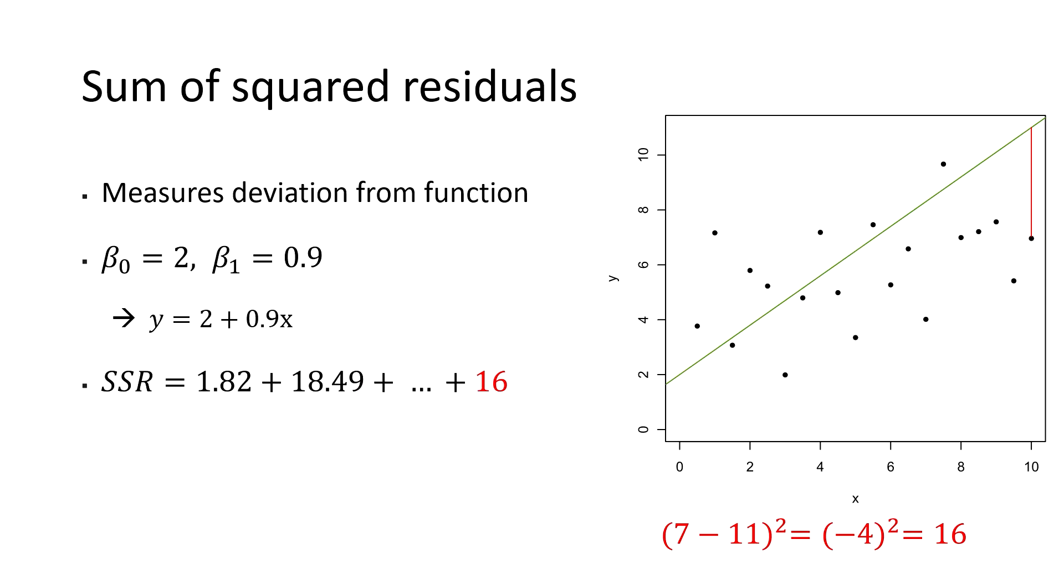This procedure is repeated until we reach our last observation. There we get a residual of minus 4 which results in a squared residual of 16. If we sum all squared residuals, we arrive at a value of 131.5. As I mentioned earlier, this linear function does not look like it fits best to the data. So we might try another function and calculate the corresponding sum of squared residuals. For example, the yellow function looks like it provides a much better fit to the data. This visual intuition is supported by the fact that the sum of squared residuals is much smaller with a value of 54.5.